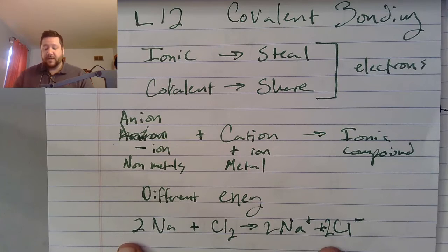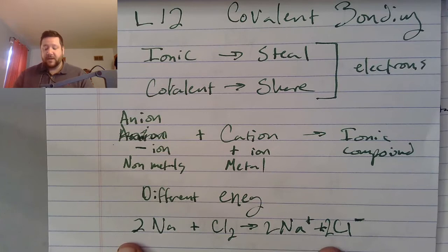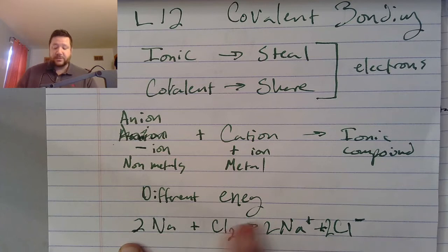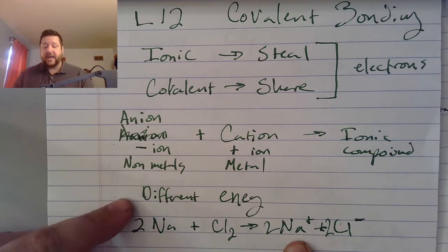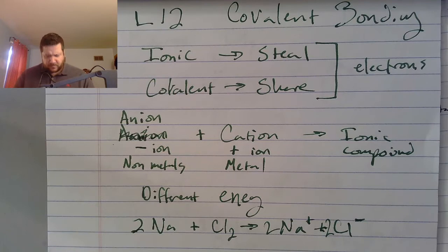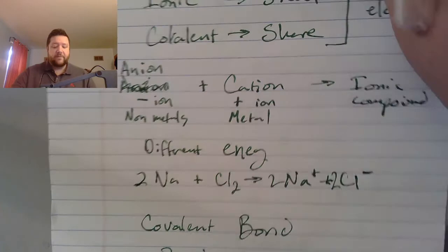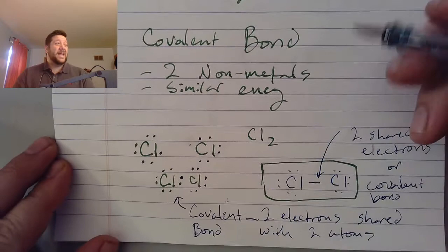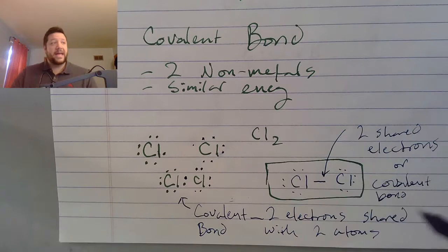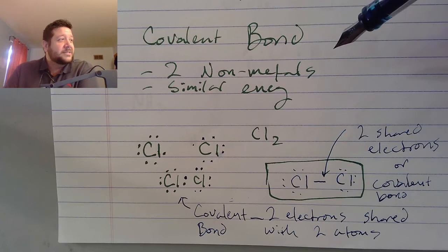Those twos in front of the equation we'll look at later in this unit, but it has to do with the law of conservation of mass — we must have the same number of sodiums on each side of the equation. To make ionic bonding happen you need different electronegativities to produce a positive and a negative ion. But what if we had two non-metals reacting that have similar electronegativities? Well, what's going to happen is called a covalent bond.